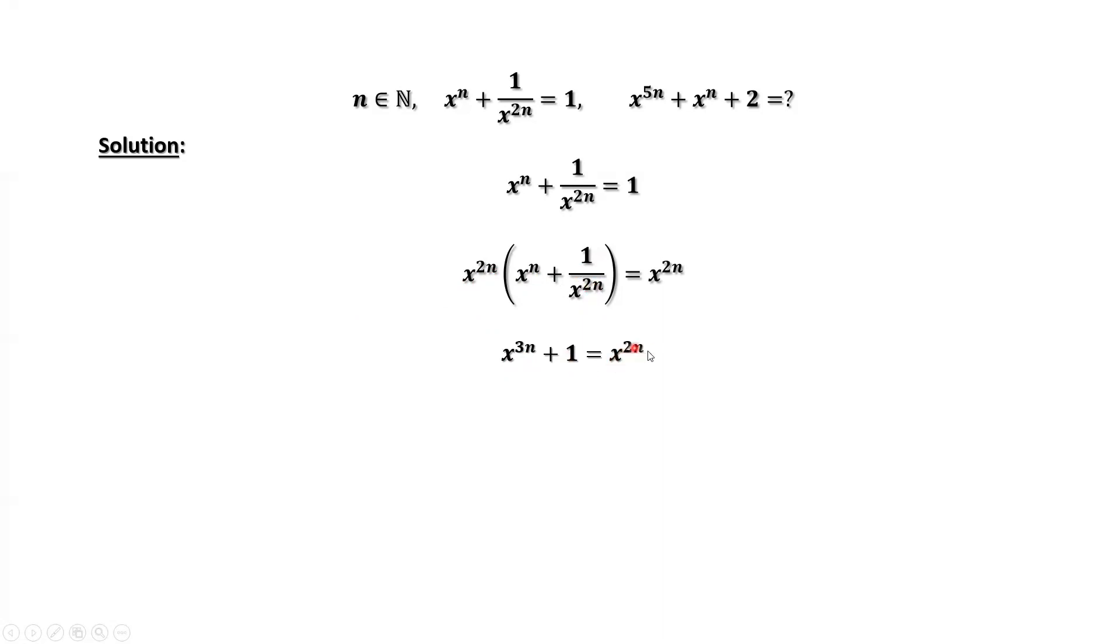Move x^(2n) to the left-hand side. We have this new result: x^(3n) - x^(2n) + 1 = 0. We want to use this new result to simplify our question and get the final answer.